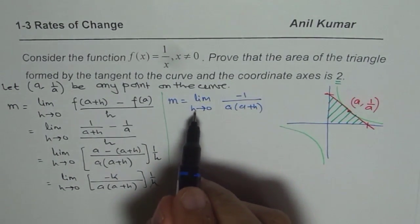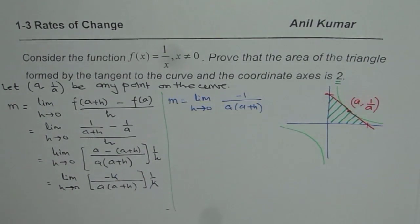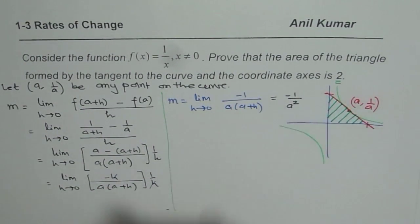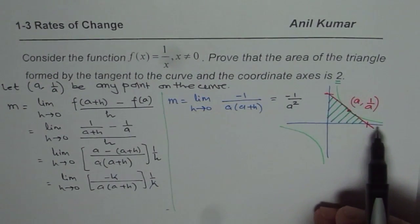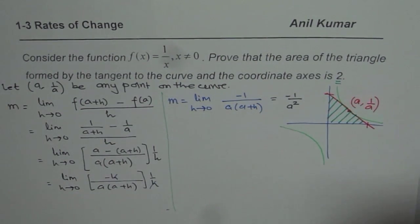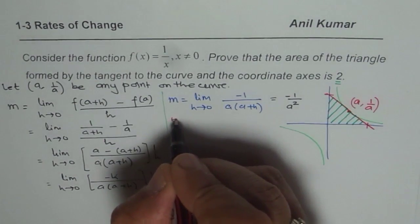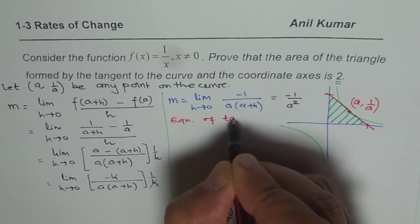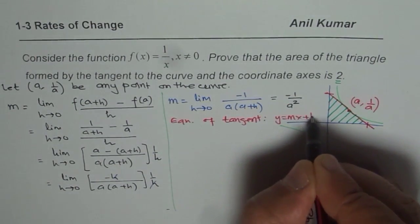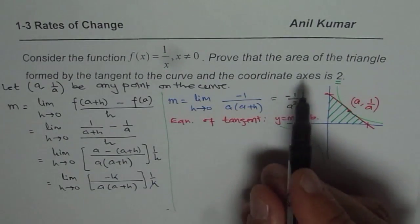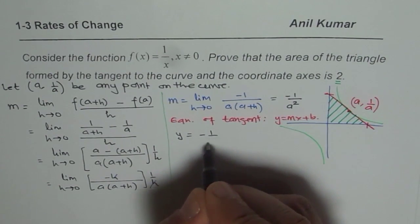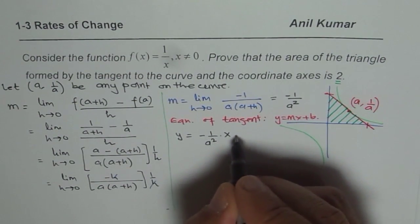Now we substitute h = 0, giving slope m = −1/a². So at any point 'a' on the curve, the slope of the tangent is −1/a². Now we can find the equation of the tangent. Using the form y = mx + b, we write y = (−1/a²)x + b.